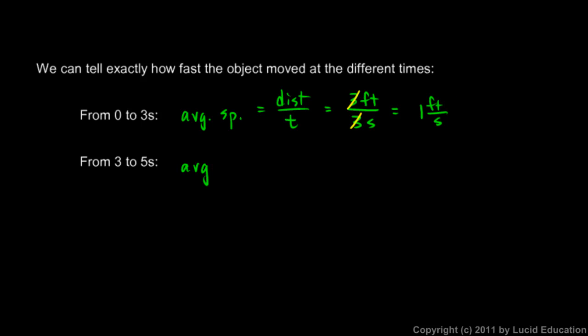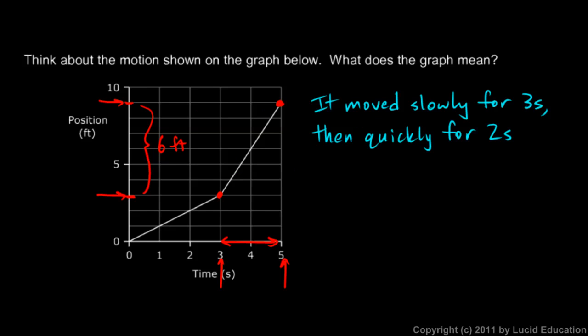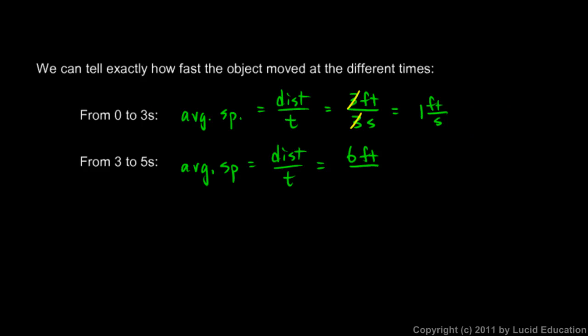Again, the average speed is distance over time. Now we're talking specifically about the time from three to five seconds. We said it went six feet, and from three to five seconds is a two-second time interval. So it went six feet during those two seconds. We can reduce this fraction: six over two reduces to three. And as before, we have feet in the numerator and seconds in the denominator, so it's three feet per second.